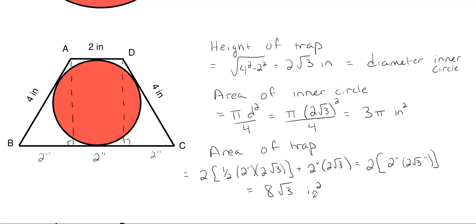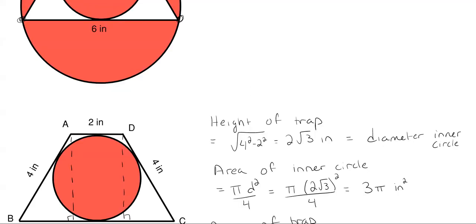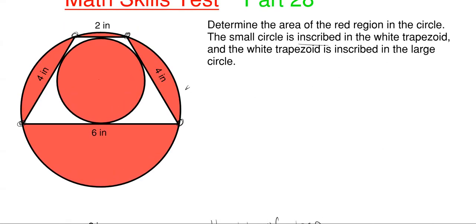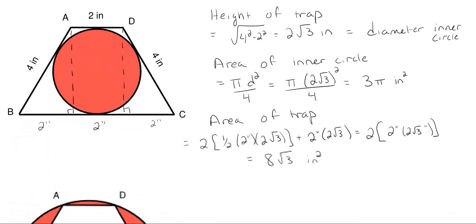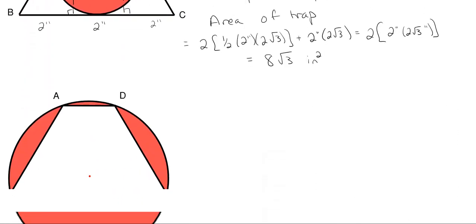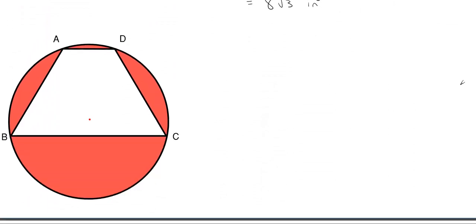Now that I've found the area of the white trapezoid and the area of the inner red circle, we need to find the overall radius of the larger circle. I've copied that portion of the diagram down here to work with the trapezoid and its dimensions.